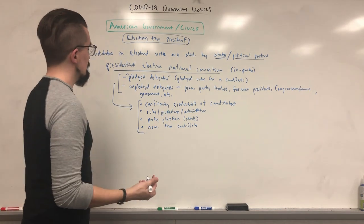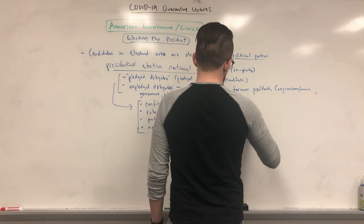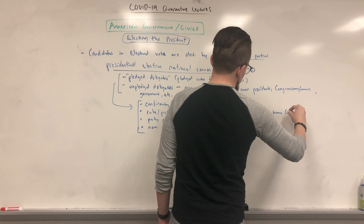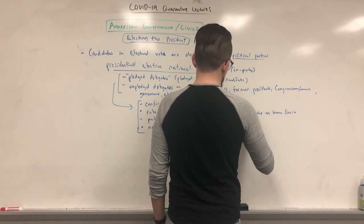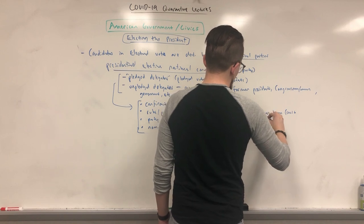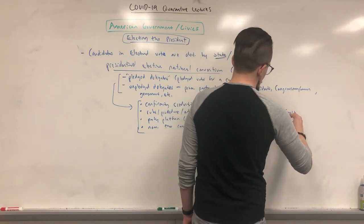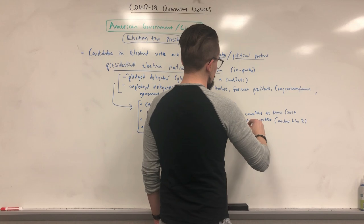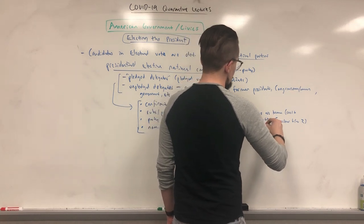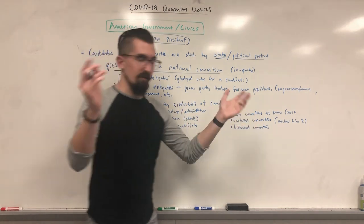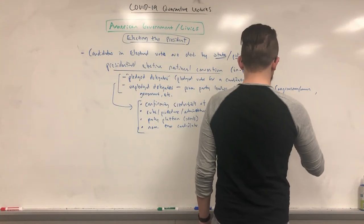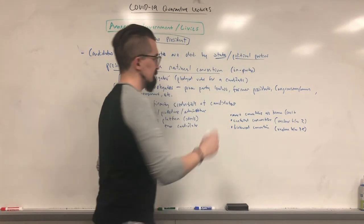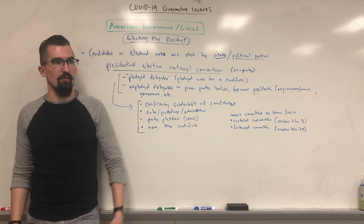Then they officially nominate the candidate. Most of the time, by the time we get to the national convention, they already know who's going to win — it's not usually contested. However, you can have a contested convention, where it's unclear between two candidates. Very rarely, you can have a brokered convention, where it's unclear between three, four, or five people. But most conventions, we already know who the candidate for that particular party will be.